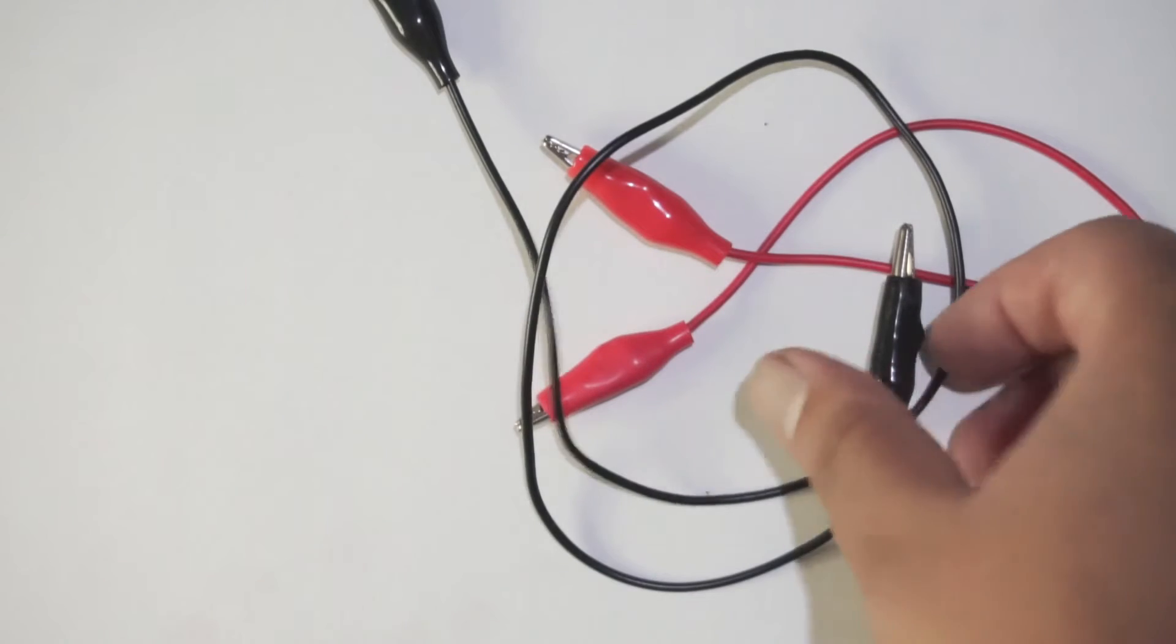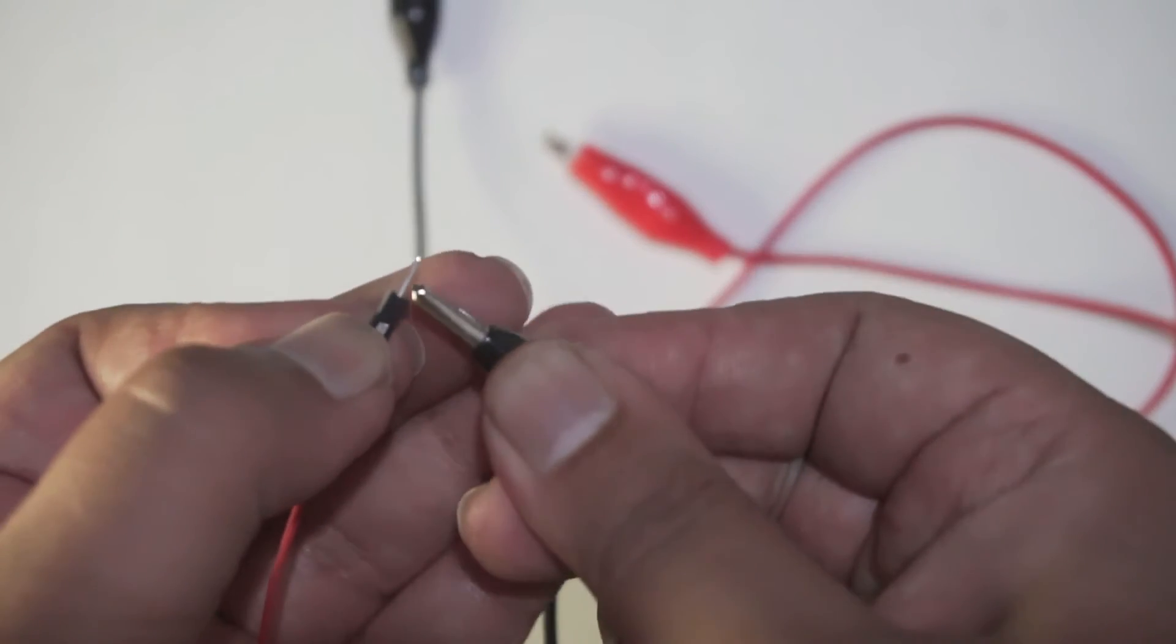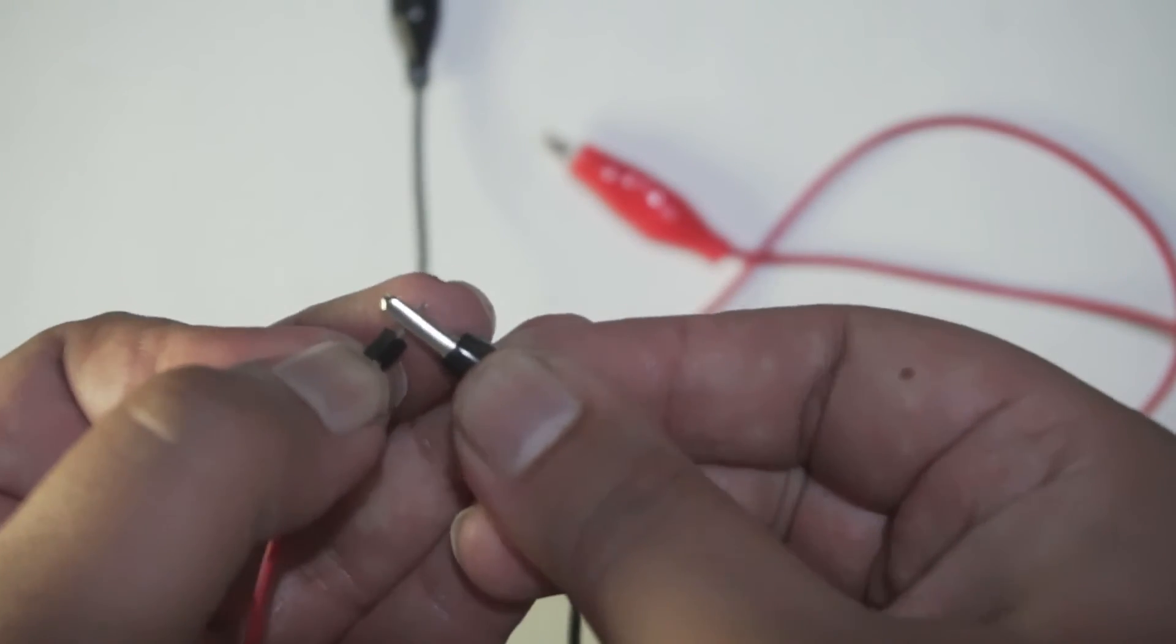We can also use alligator clips with the jumper cables like this. And this is how you can make a connection with any jumper cable.